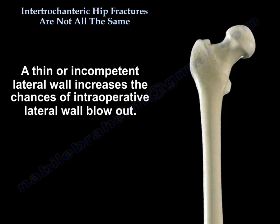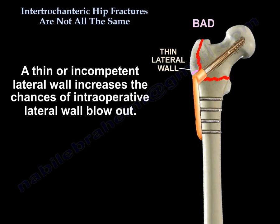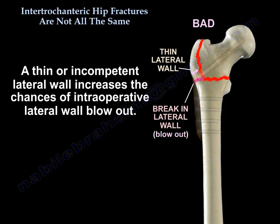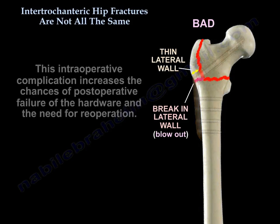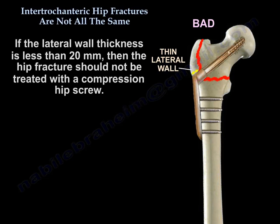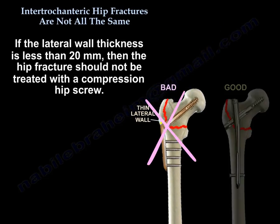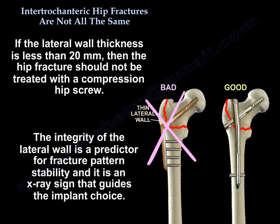A thin or incompetent lateral wall increases the chances of intraoperative lateral wall blowout. This intraoperative complication increases the chances of post-operative hardware failure and the need for re-operation. If the lateral wall thickness is less than 20 mm, it should not be treated with a compression hip screw. The integrity of the lateral wall is a predictor of fracture pattern stability and is an X-ray sign that guides implant choice.